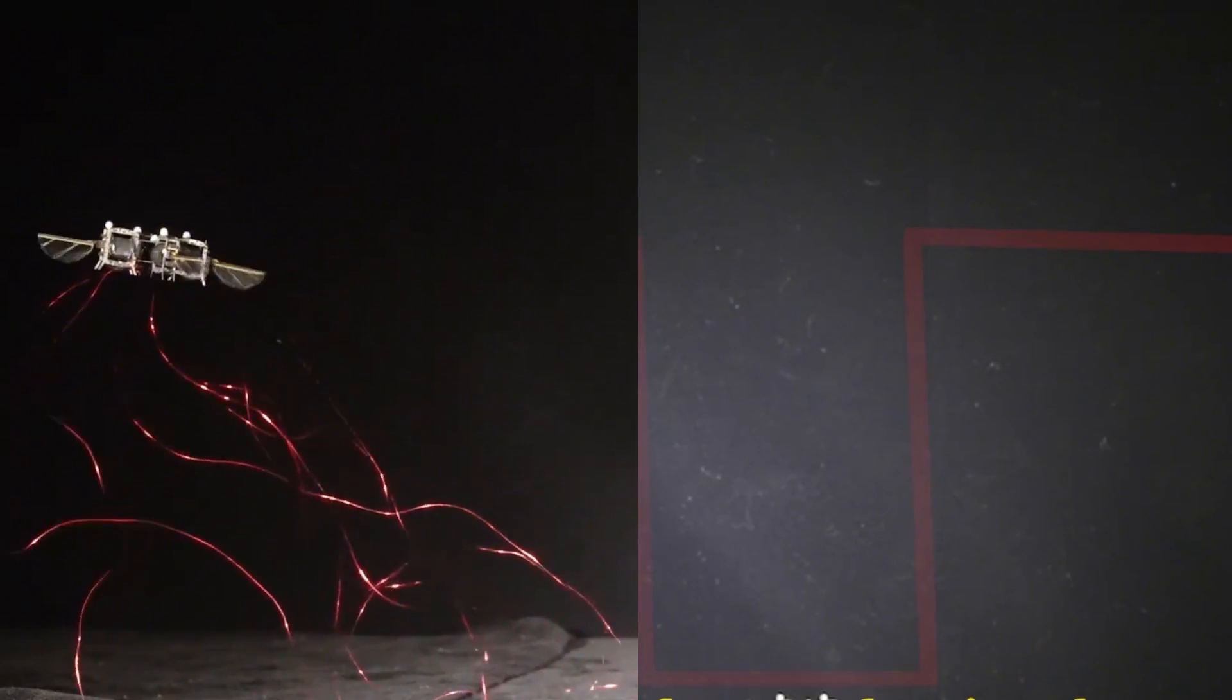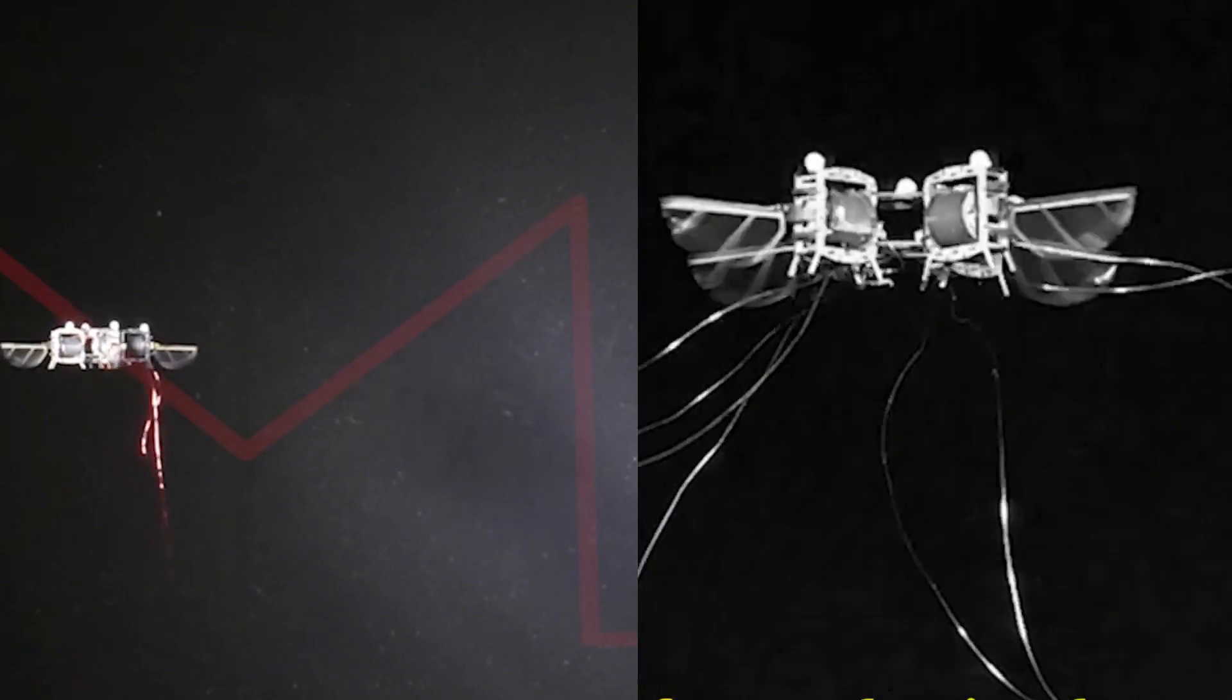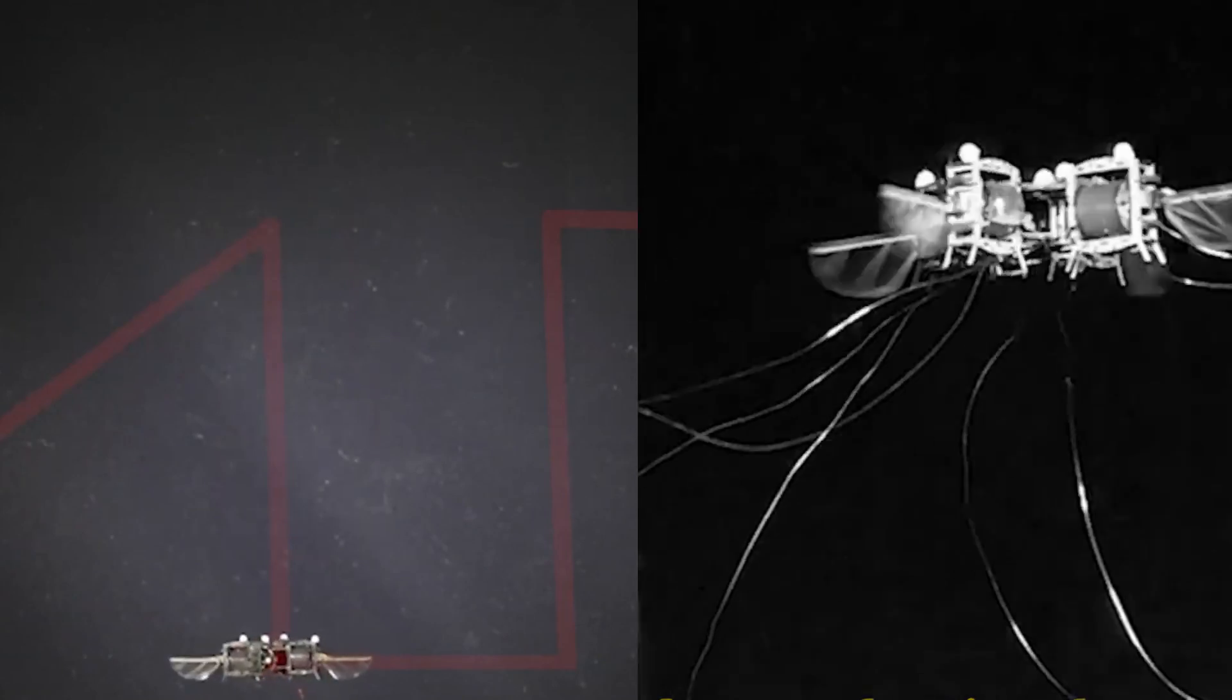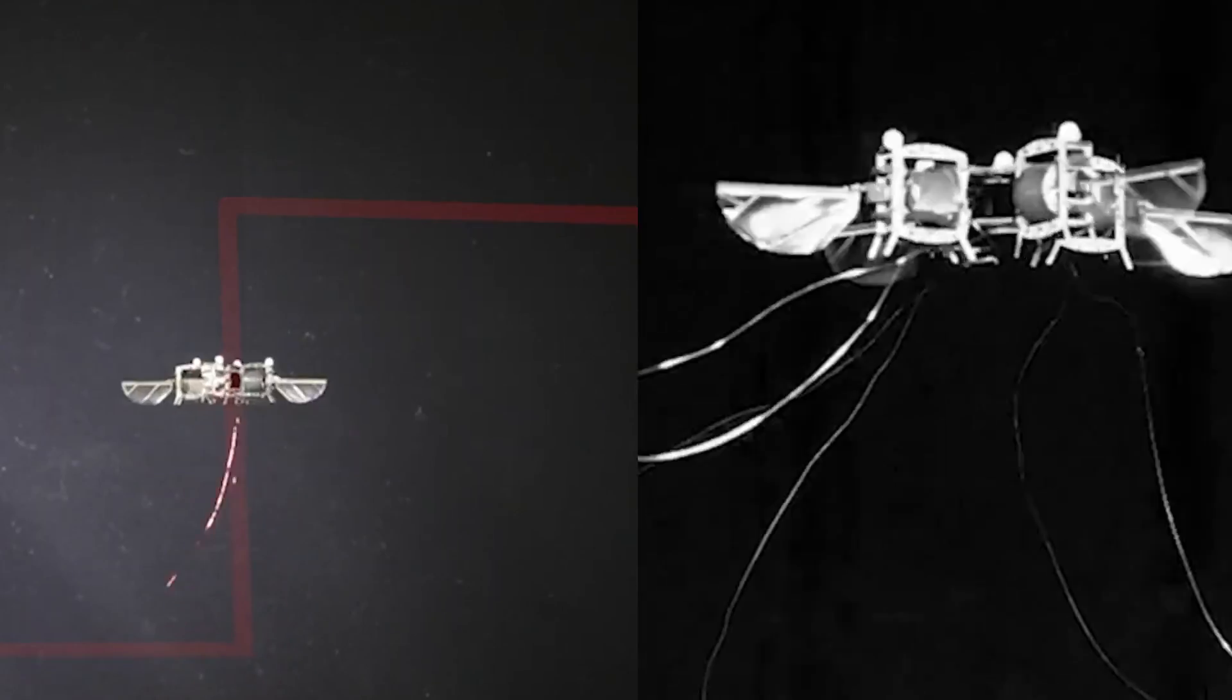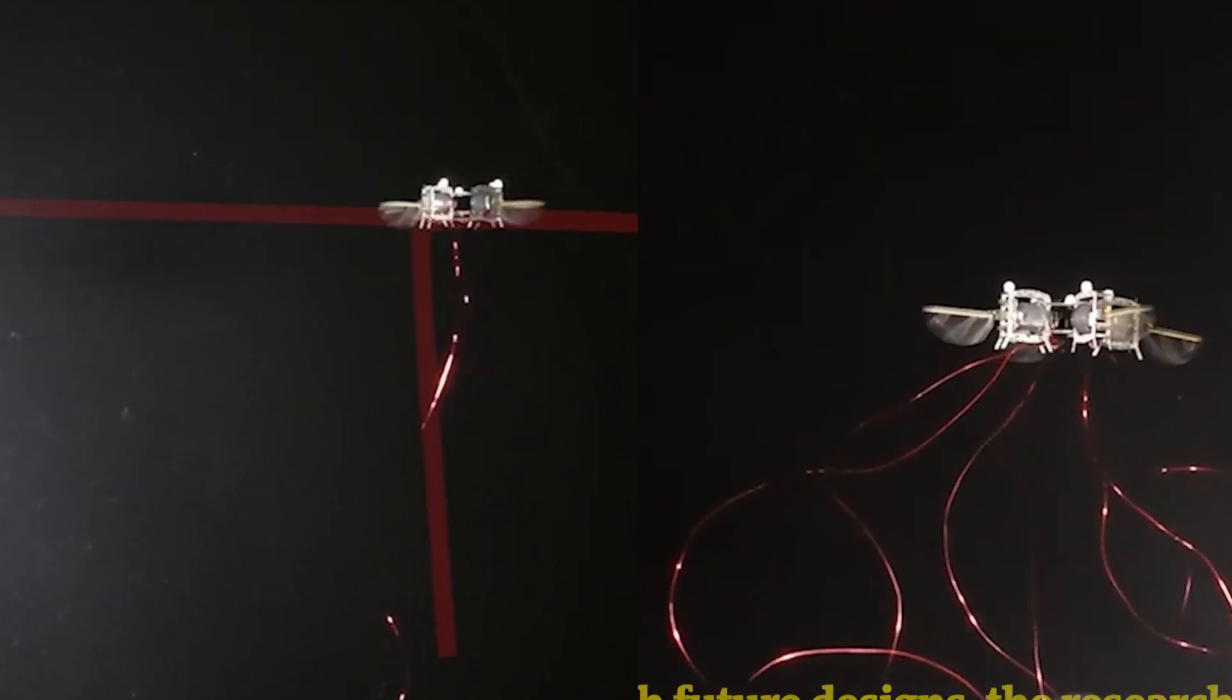These capabilities are made possible through the use of muscle-like soft actuators instead of traditional electric motors. These actuators mimic the way real muscles function, enabling the robot to flap its wings efficiently and with incredible flexibility.